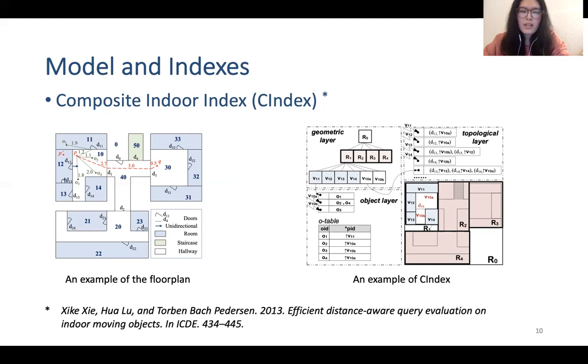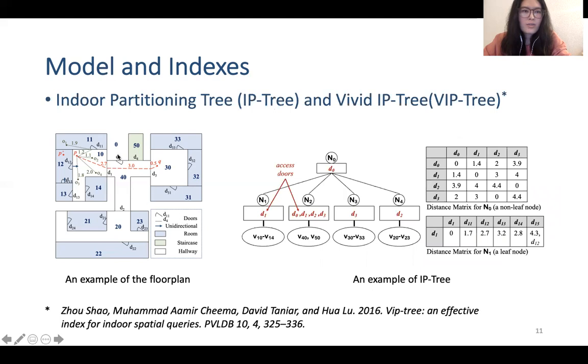The next one is Indoor Partitioning Tree and VIP tree. It's a kind of tree-based index. Each node in a tree maintains distance matrices. The difference between IP tree and VIP tree is that VIP tree stores more information in its distance matrices.